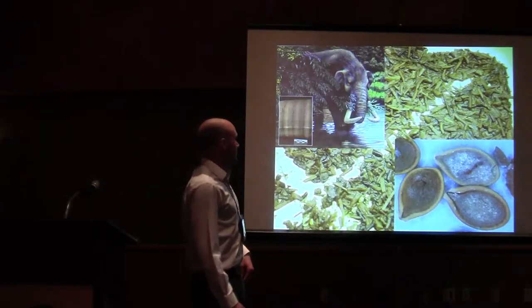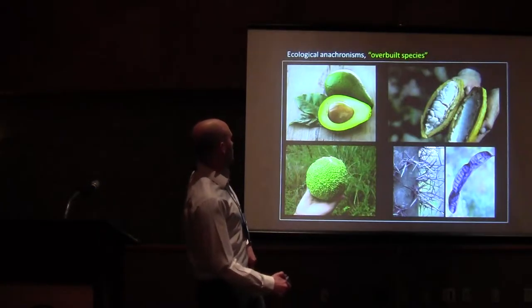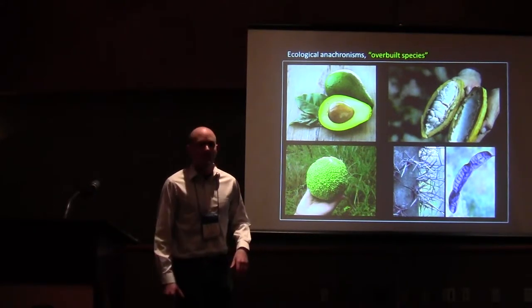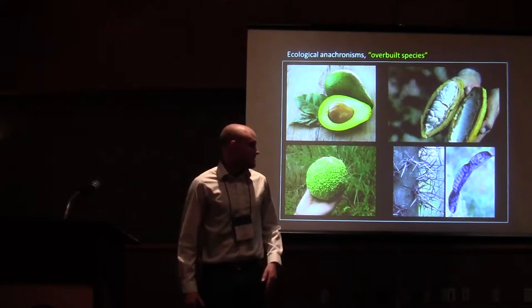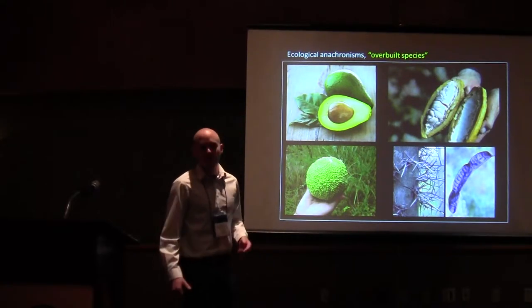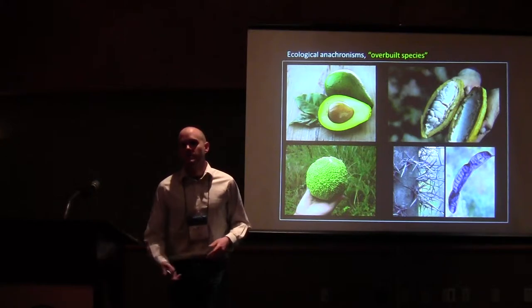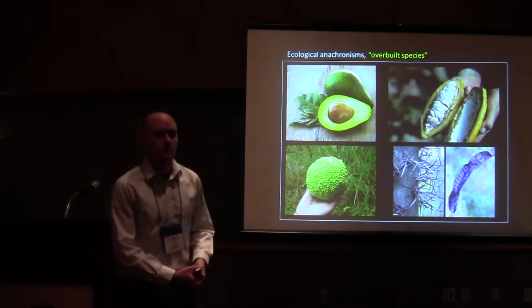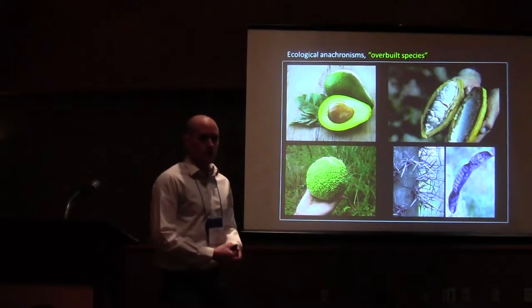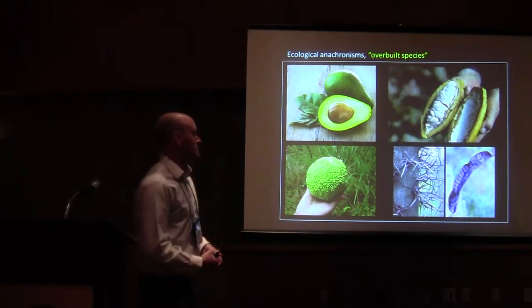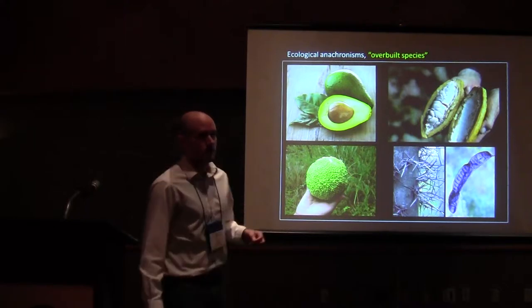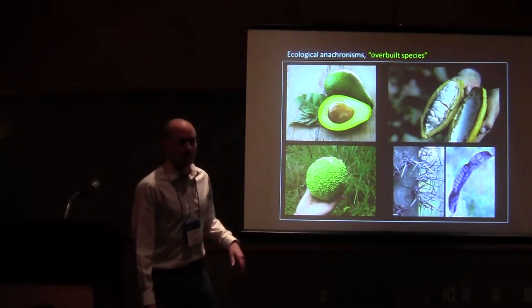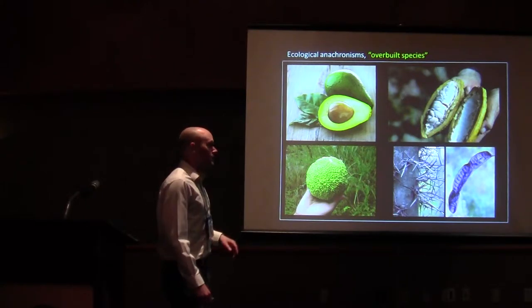This put them squarely in the category of ecological anachronisms. This was a term coined by Janzen and Martin in the early 1980s in a Science paper, used to describe a plant that's removed temporally from its co-evolved dispersal partner by virtue of extinction events or other sorts of ecological shifts. The New World is absolutely packed full of these anachronistic species. A few examples here: avocado, cacao, honey locust, osage orange, and honey locust on the bottom right.